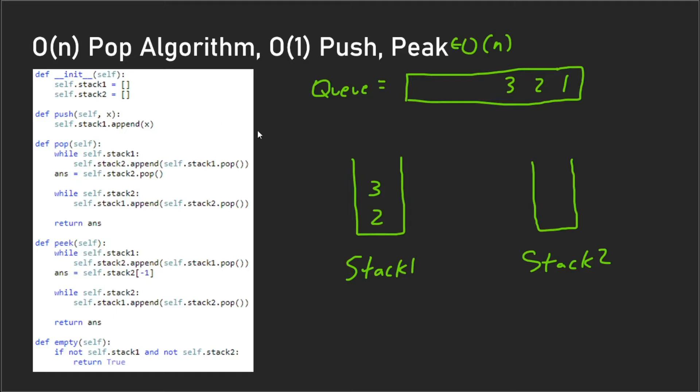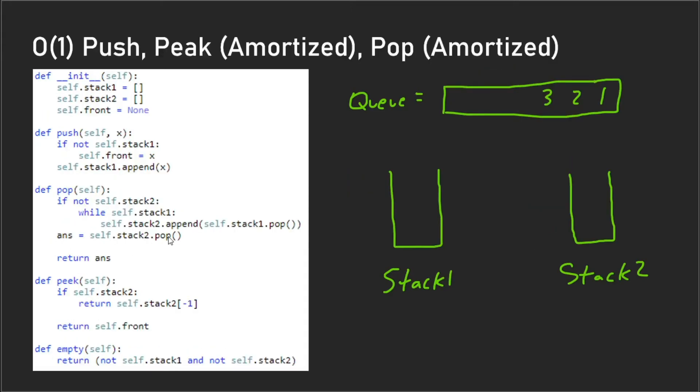So how do we remedy this? Well, first I would recommend you to pause the video and look over this code right now and see if everything makes sense. Now I'm going to go over the algorithm to make it O(1) amortized runtime.